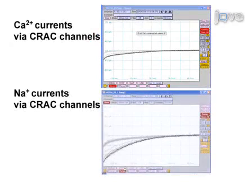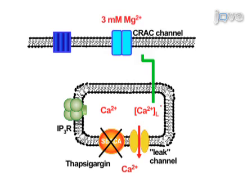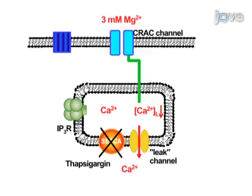Here, a method is presented that allows for reliable and reproducible recording of endogenous calcium and sodium CRAC channel currents from human T cells. First, thapsigargin, a blocker of sarco-endoplasmic reticulum calcium ATPase, is applied in a calcium-free extracellular solution containing 3 millimolar magnesium to deplete the store. This procedure opens CRAC channels but does not induce CRAC current.